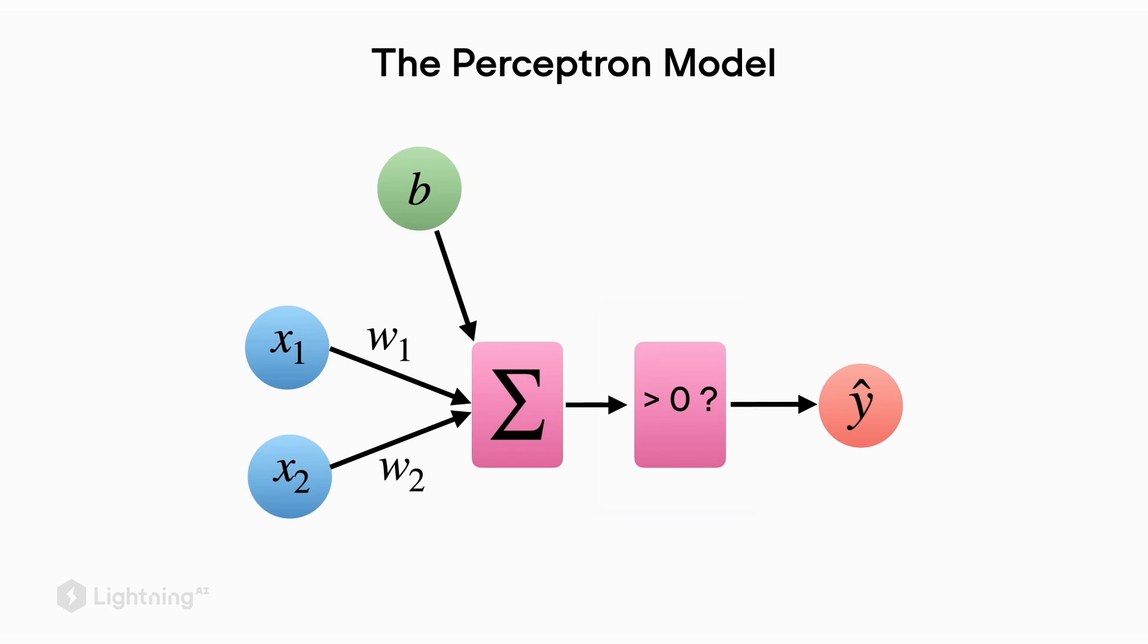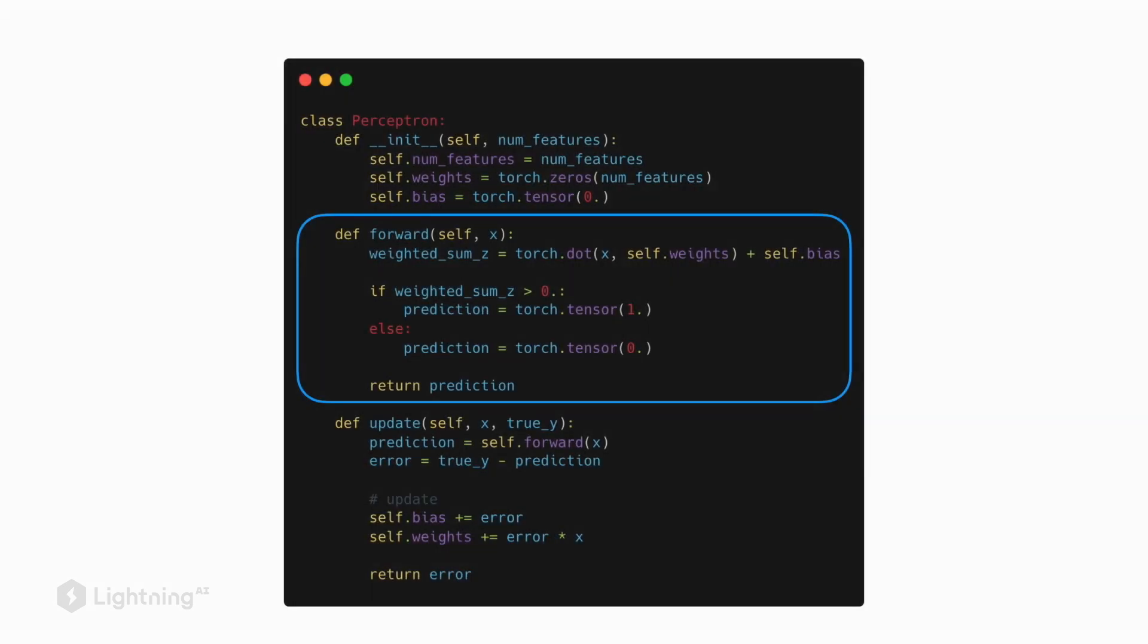Based on this threshold, we obtain the label shown as y hat, where y hat is the output of the perceptron. In code, we saw that this corresponds to the forward method we implemented.